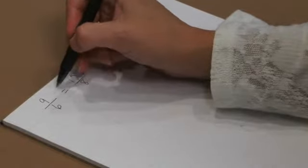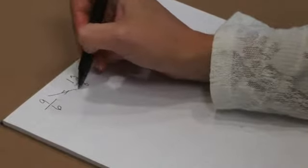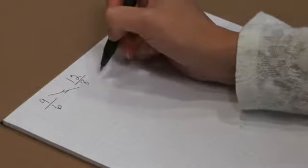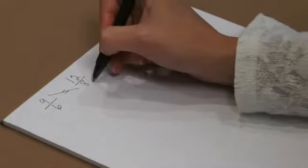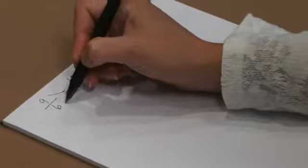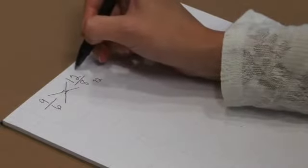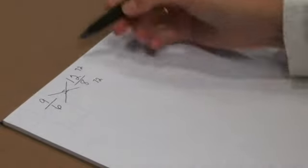The students can cross multiply. So we have 9 times 8, which is 72, and 6 times 12, which is also 72. So this is proportion to one another.